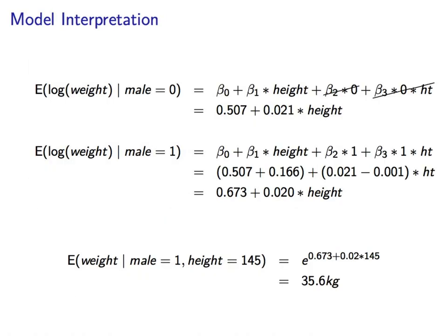So, how do we interpret this model? These two equations describe predictions for our new model, but now we are predicting the log of the weight. So, log of weight given male, log of weight, female, male. So, males from this population who are 145 centimeters tall. Again, these all add up the same as the previous one. So, the expected weight for males who are 145 centimeters tall would be e raised to the 0.673 plus 0.02 times 145. Which is going to be 35.6 kilograms.